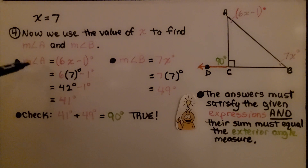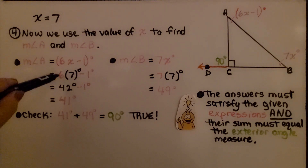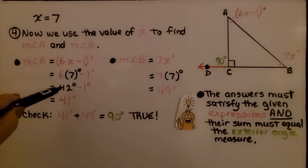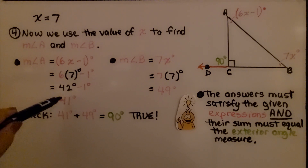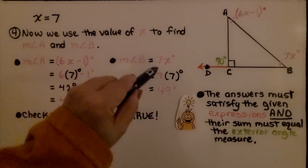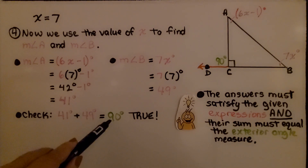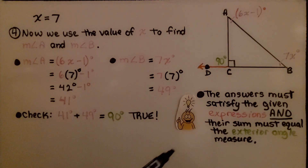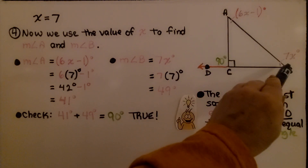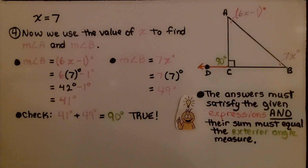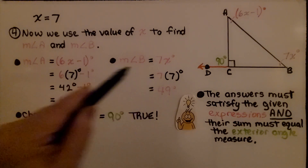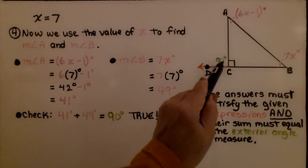We use the value of x to find the measures of angle A and angle B. The measure of angle A is 6x minus 1 degrees. Substituting x equals 7, we get 6 times 7 minus 1, which is 42 minus 1, which is 41 degrees. For angle B, substituting 7 for x gives 49 degrees. We can check: 41 degrees plus 49 degrees equals 90 degrees. That's true. The answers satisfy the given expressions and their sum equals the exterior angle measure.